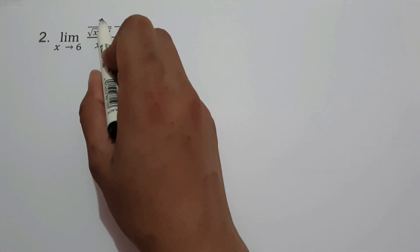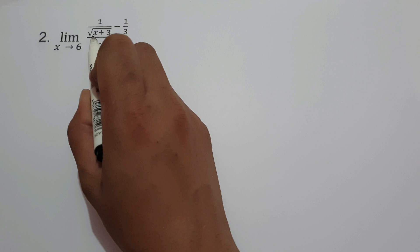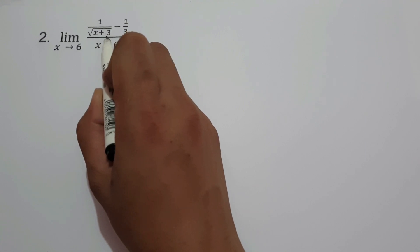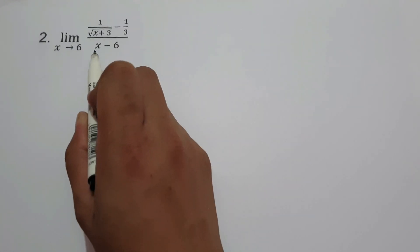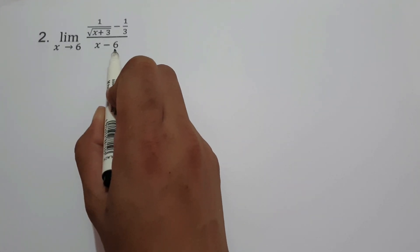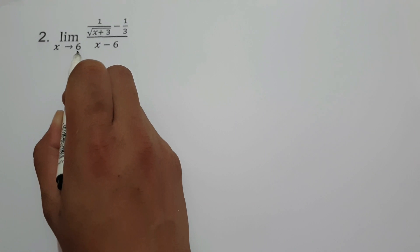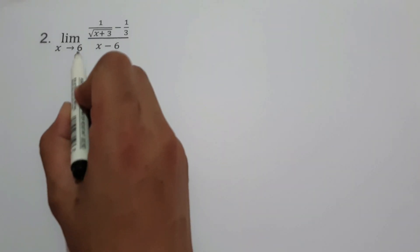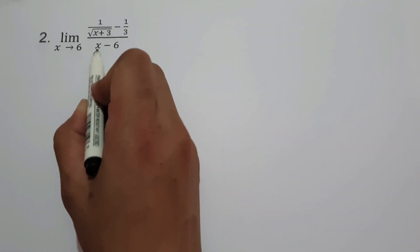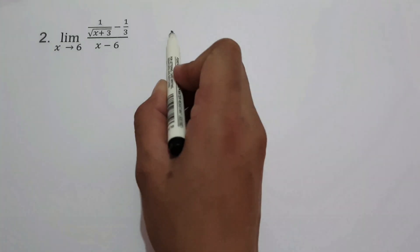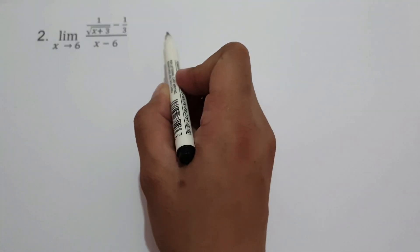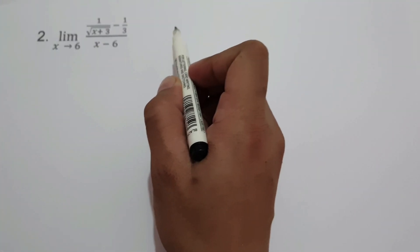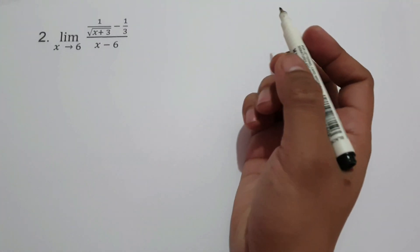On example number 2, what is the limit of 1 over square root of x plus 3 minus 1 third, all over x minus 6, as x approaches 6? If we substitute directly the value of x, we will end up with 0 over 0. So how can we find the limit of the given expression?